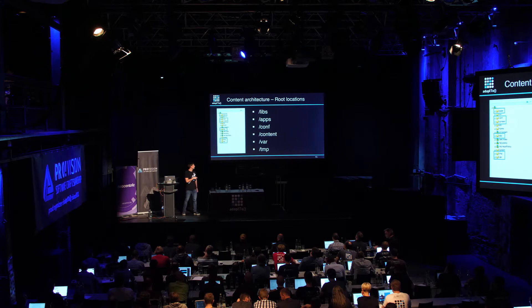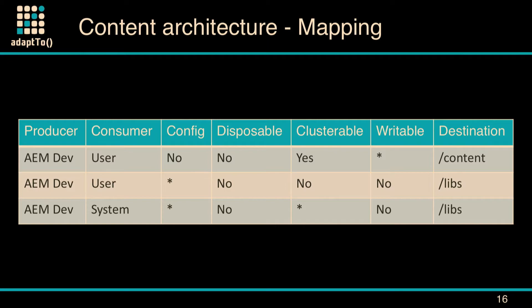The difference is that temp is disposable while var is not. So based on the content categories and the content buckets we just considered, we built a very large table with all the category values and where content should go. This is just a short example — there's a full mapping in the appendix if you download the presentation.